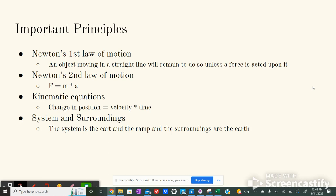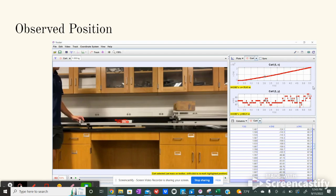Kinematic equations such as change of position is equal to velocity times time, and the system and surroundings where the system in this experiment is the cart and the ramp and the surroundings is the earth.